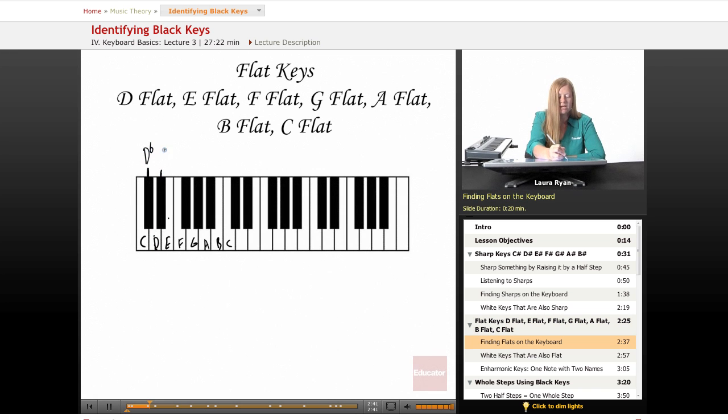This one is the black key below E, E flat. Black key below G, G flat. Black key below A, A flat. Black key below B, B flat. Now, I didn't talk about F flat. That's E natural. So here is our white key. C flat is B natural.